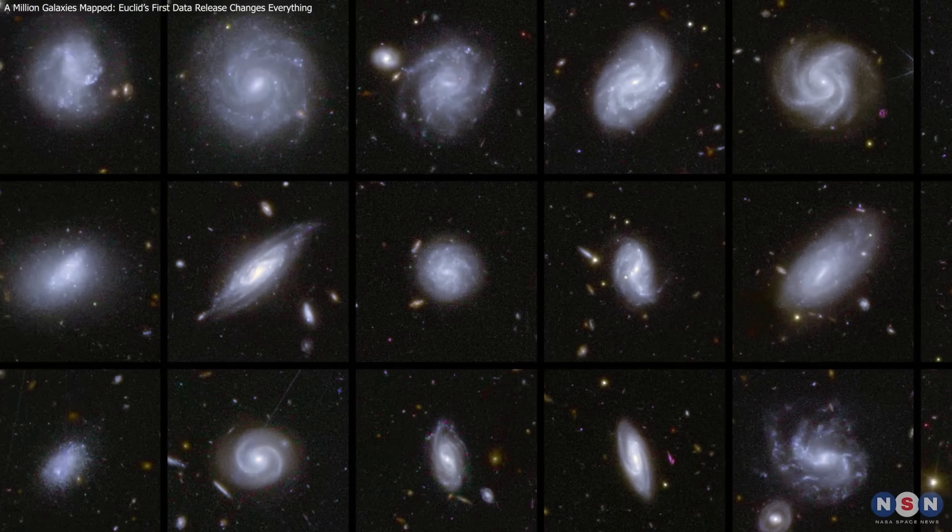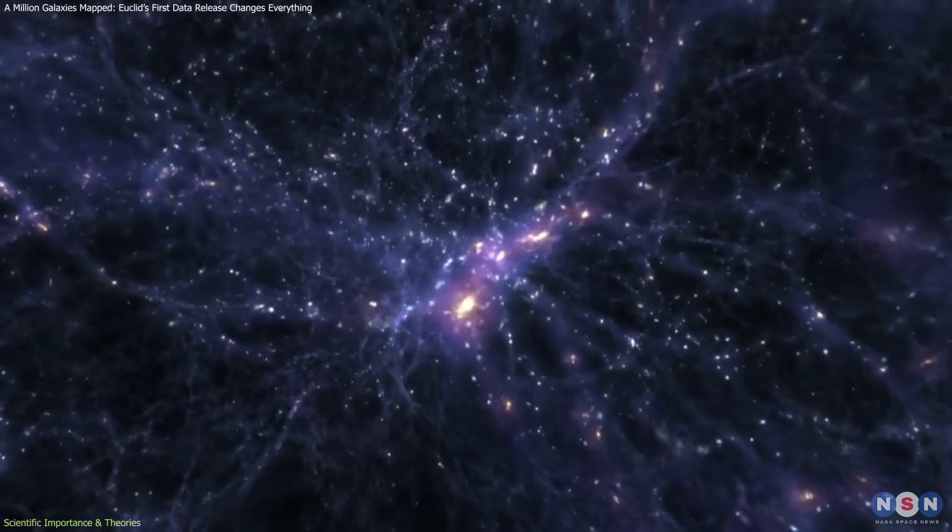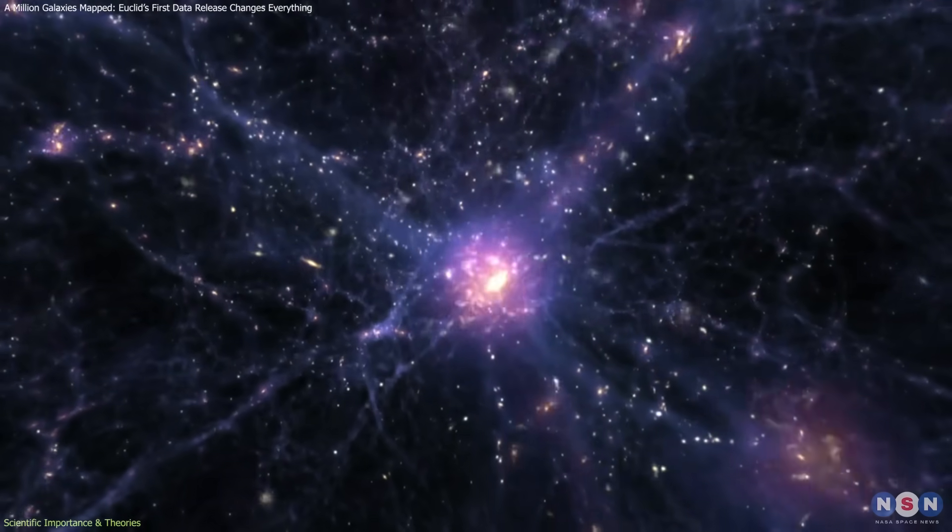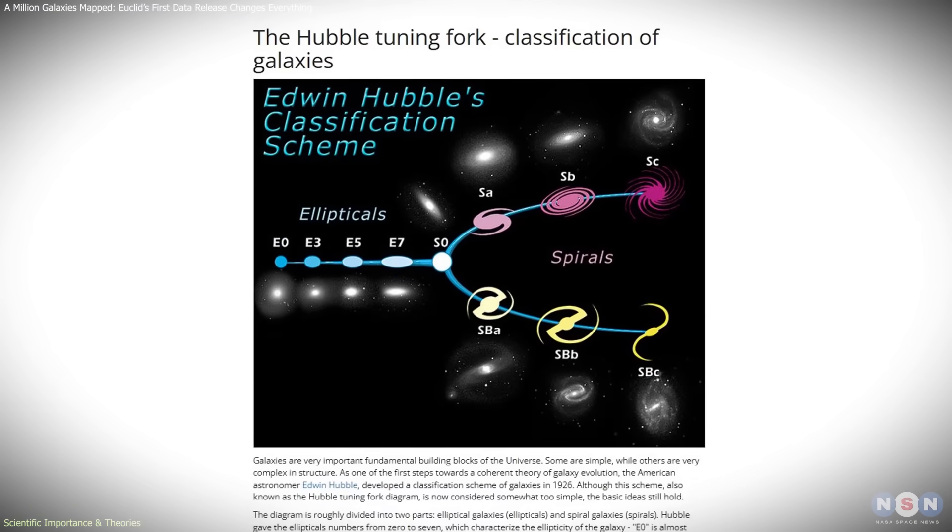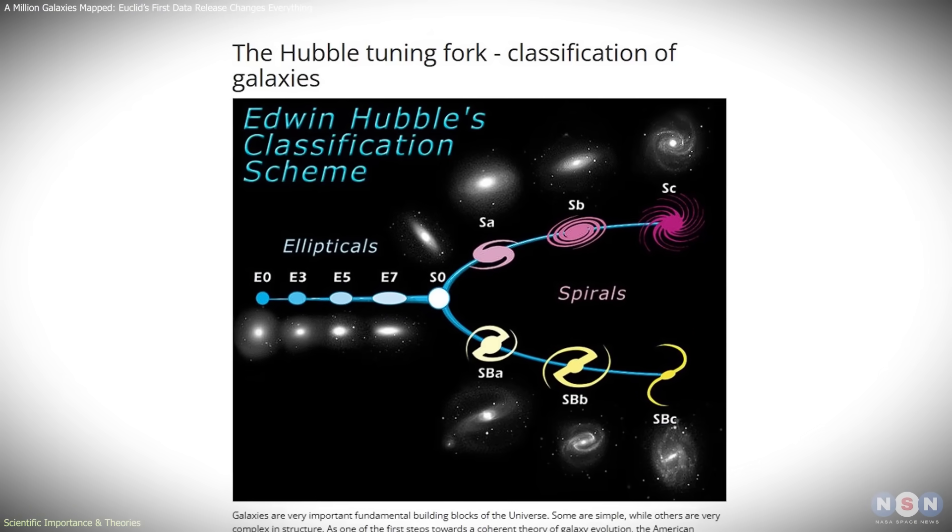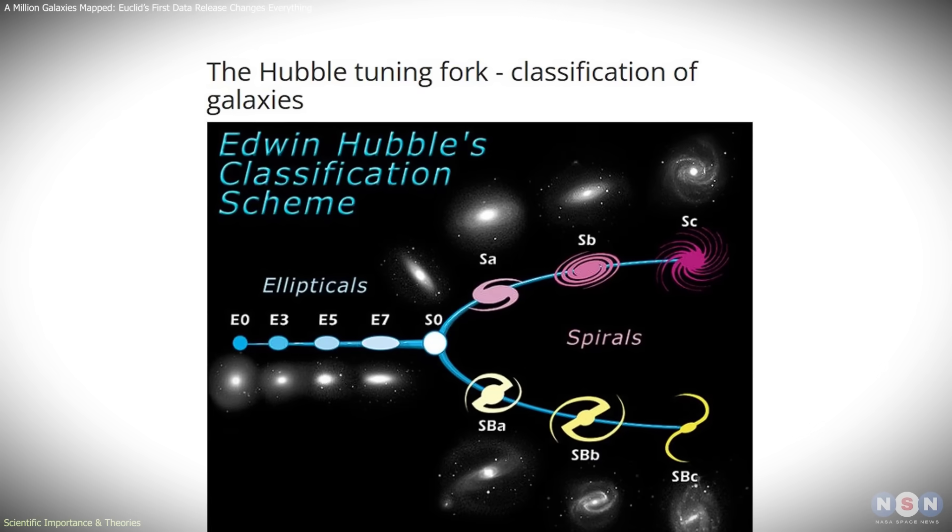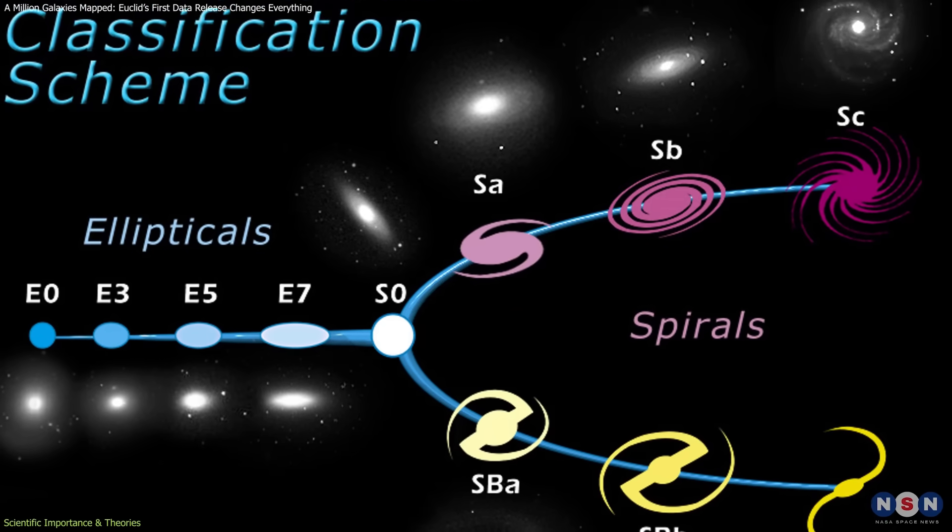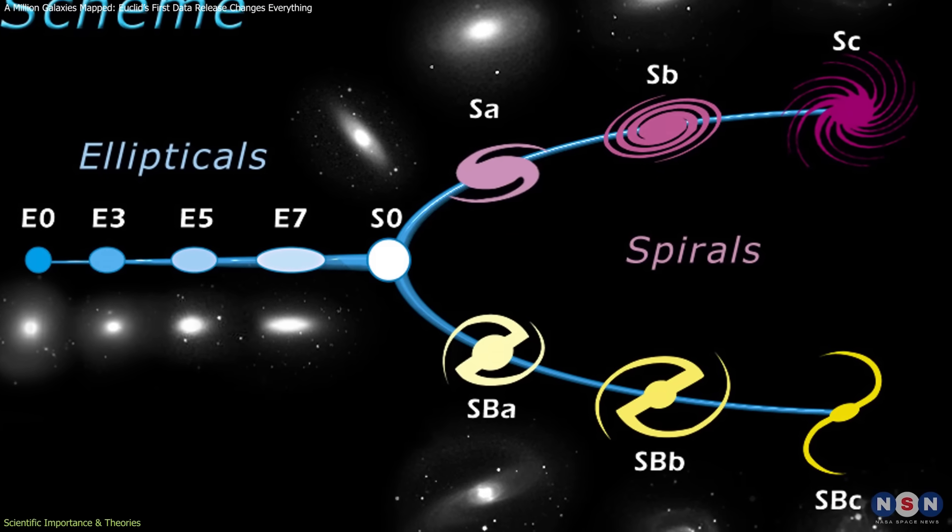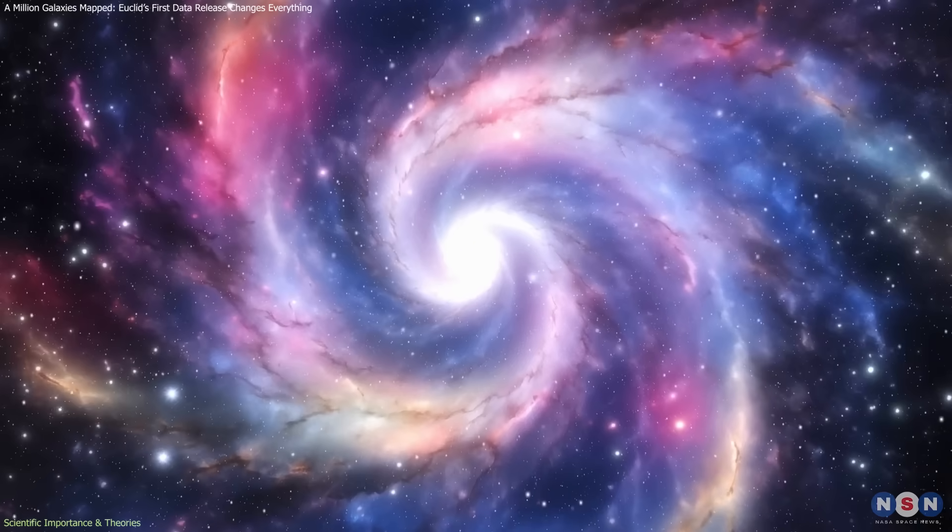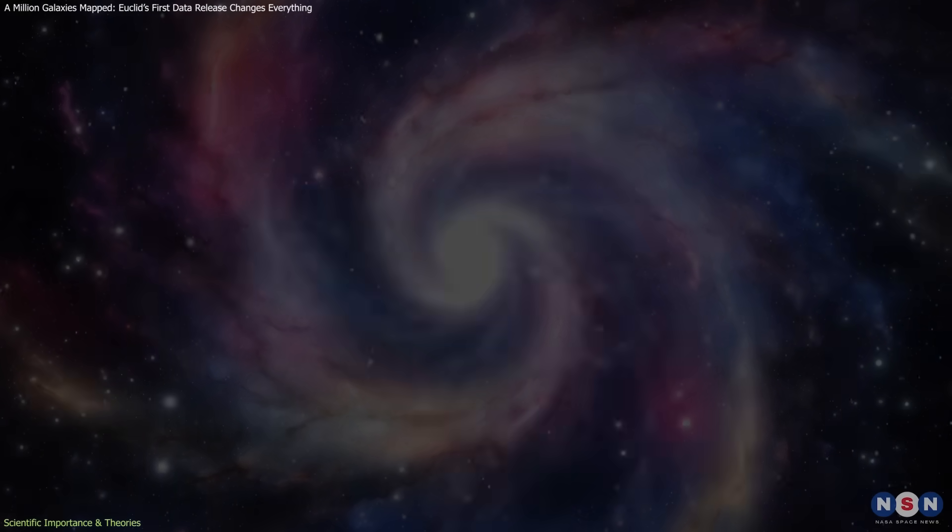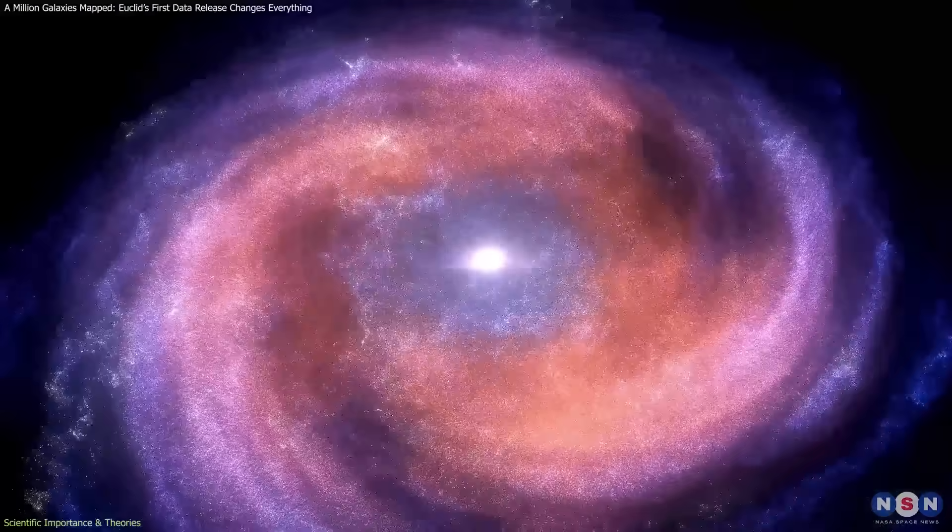The new findings matter because they address long-standing gaps in our understanding of how galaxies change over time. Much of what astronomers know is based on the morphological classification system, the familiar tuning fork, which organizes galaxies into spirals, ellipticals, lenticulars, and irregulars. That framework describes what galaxies look like, but it doesn't explain how they became that way. Euclid's data allows morphology to be tied to evolution more directly.